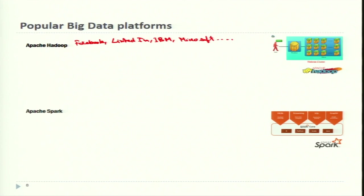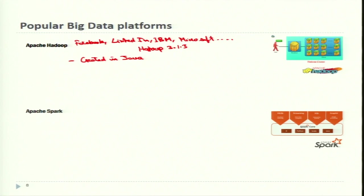The most recent stable version of Hadoop is 3.1.3. It was created in Java by the Apache Software Foundation, which is why it is called Apache Hadoop. It is an open source software framework for storing and handling big data. Major features of Apache Hadoop include being fault tolerant and scalable.